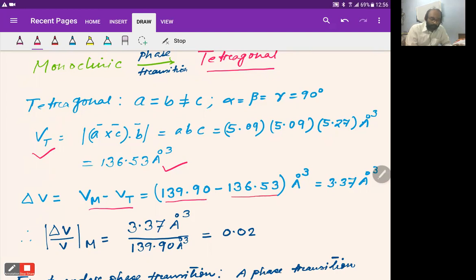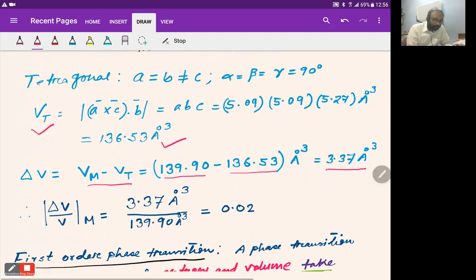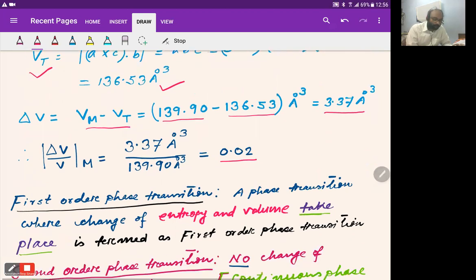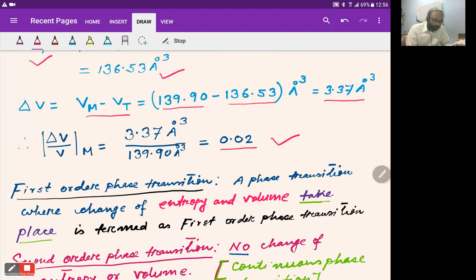136.53, which gives 3.37 Ų. Therefore, fractional change ΔV/V = 3.37 / 139.90 = 0.024, which rounds to 0.02 (two decimal places). Since this is a phase transition, let's review first-order phase transition, in which